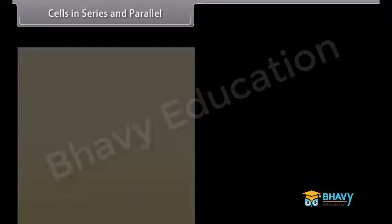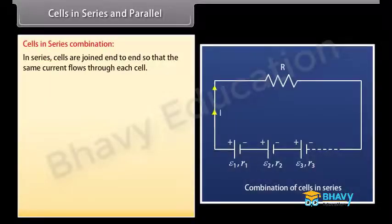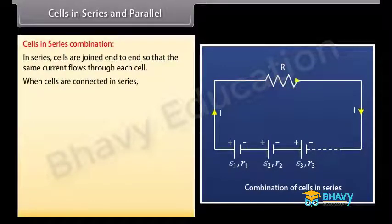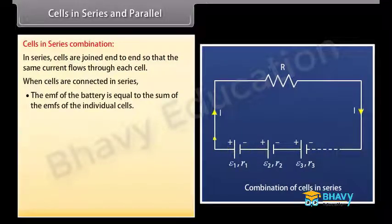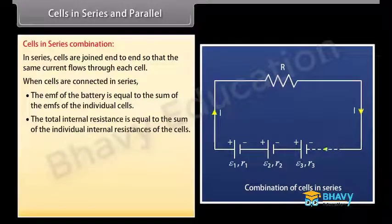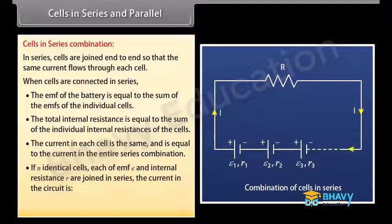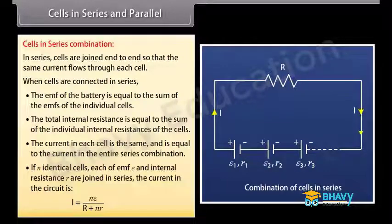Cells in series combination: cells are joined end-to-end so the same current flows through each. The positive terminal of one cell is connected to the negative terminal of the next. The EMF of the battery equals the sum of the EMFs of the individual cells. The total internal resistance equals the sum of individual internal resistances. If N identical cells, each of EMF E and internal resistance r, are joined in series, the current in the circuit equals NE divided by (R plus Nr).